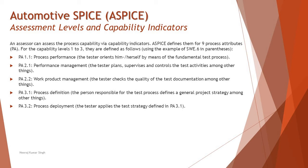Process Attribute 3.1 from level 3 is Process Definition — the person responsible for the test process defines a general project strategy, among other things. PA 3.2 is Process Deployment — the tester applies the test strategy defined in PA 3.1. When assessing a particular process capability, these activities must be well established within your organization to receive the accreditation that you stand at level 2 or level 3, depending on the degree of fulfillment.